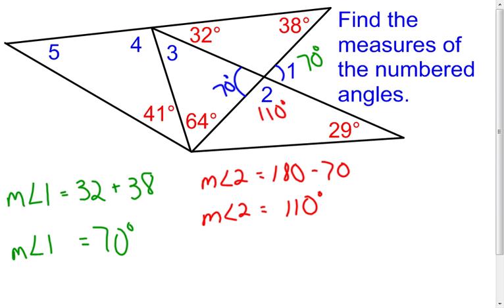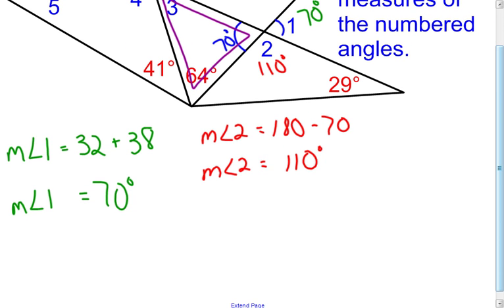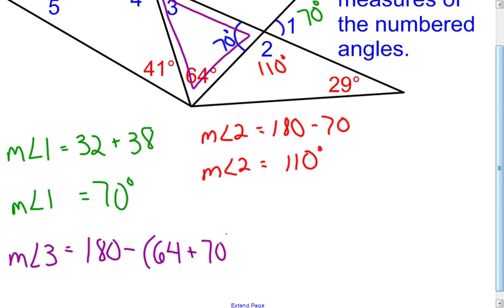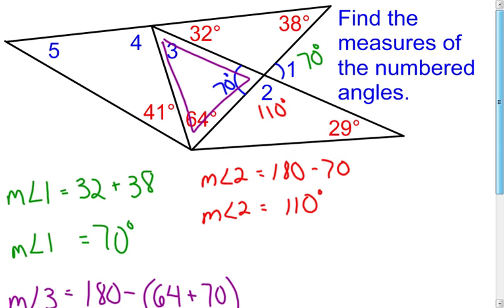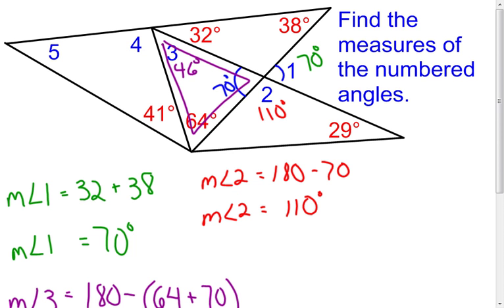Now I can look at the triangle formed here. I know the three angles in a triangle have to add up to 180 degrees, and I know two of them. To find the measure of angle 3, I subtract the other two angles: 64 plus 70 equals 134 degrees, and 180 minus 134 gives me 46 degrees for the measure of angle 3.